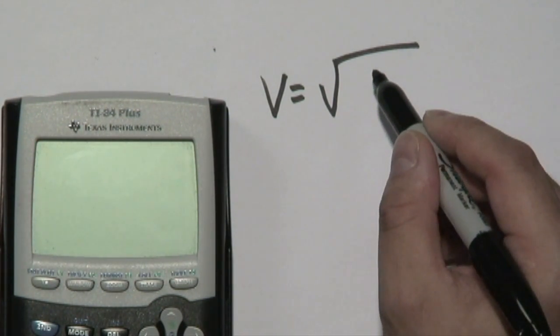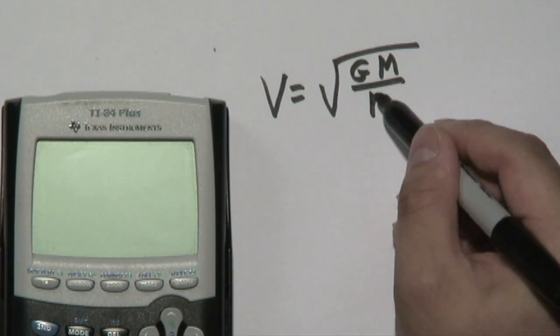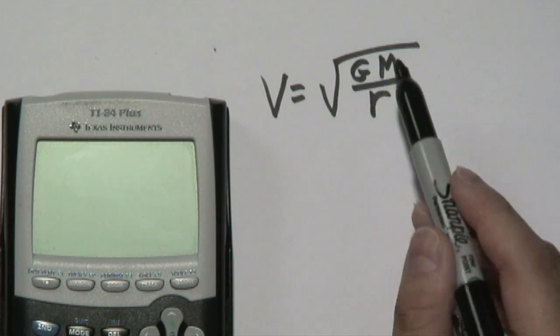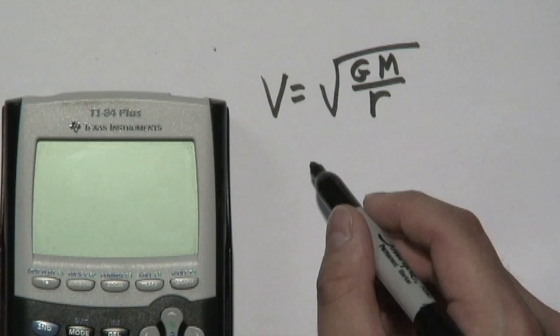So the velocity is the square root of G times M, all that over r. So it's just three variables. Let's talk about what each of them means and what's involved.